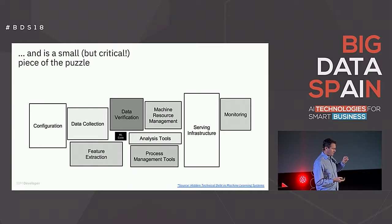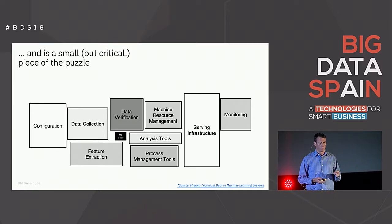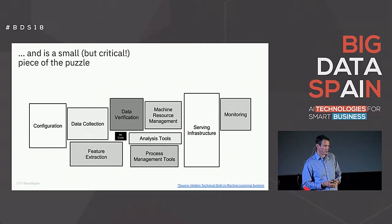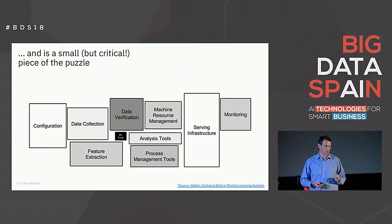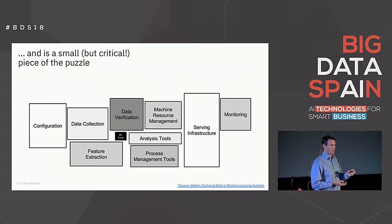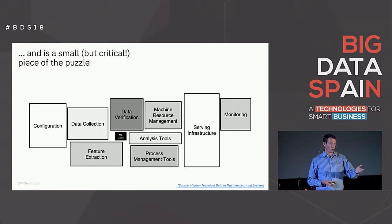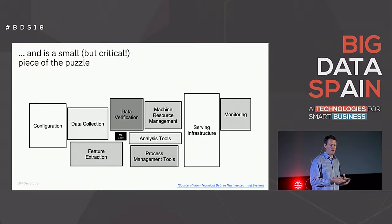That entire workflow is only a small piece of the puzzle. I really like this image from a Google paper — the hidden technical debt of machine learning — which illustrates that machine learning code, while critical to the intelligent application and adding a lot of value, is really just a small percentage of the overall picture. In particular, we need to worry about how that code integrates to the serving infrastructure, how we're getting it from training to production and deployment, which is what we're going to talk about today.